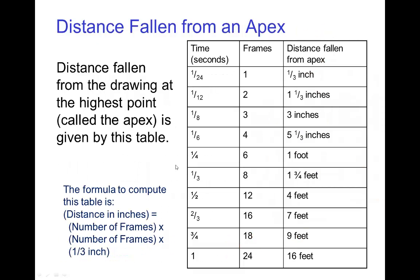Now we can take the table of distance fallen and go for longer times. And so you see this table here. For example, after one second, which is 24 frames, the distance fallen from apex if there's negligible air resistance is about 16 feet. And you can compute more values just using this formula. The distance in inches is the number of frames times the number of frames times a third of an inch.